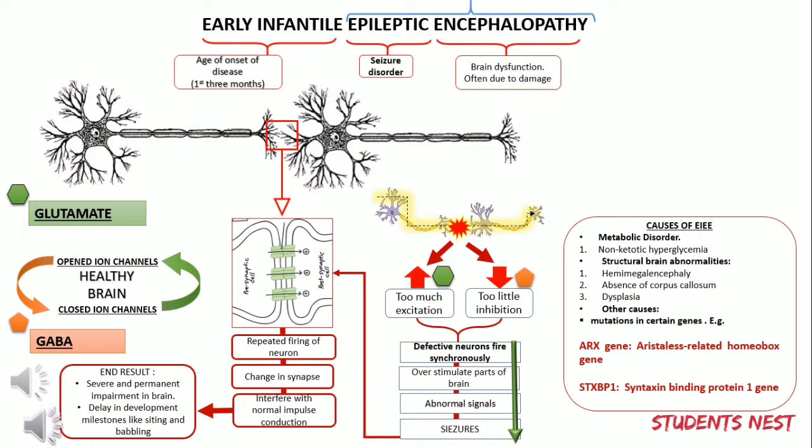These genes include the ARX, or Aristaless-related homeobox gene, and STXBP1, or Syntaxin-Binding Protein-1 gene.